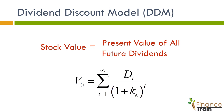As you can see, the general form of the model shows that the stock value is equal to the present value of all cash flows, where D is the dividend for each period, K is the required rate of return on common equity, and V is the current stock value. Calculating the value of stock using this formula is impractical, as we cannot determine the dividends for each period till infinity.